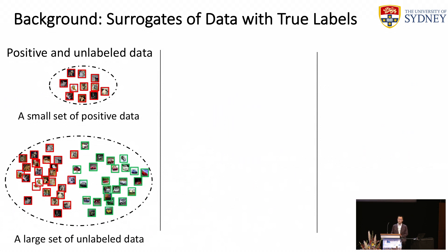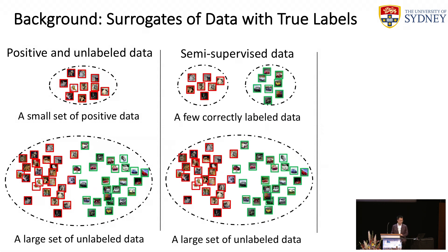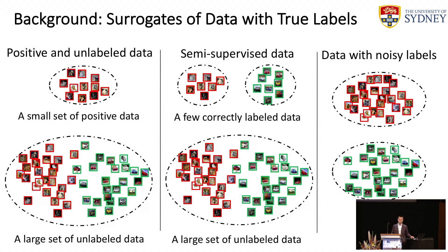The first one is the positive and unlabeled data, where we are given a small set of positive data and a large set of unlabeled data. The second one is semi-supervised data, where we are given a large amount of data with noisy labels. A famous example is the WebVision dataset, where data are downloaded from the internet by searching with keywords.